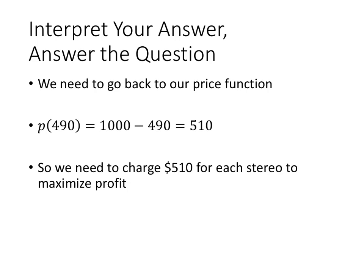So that means we need to go back to our original formulas and use the price function, plug in x equals 490, and we get that little p, the price, is 510. So that means that we need to charge $510 for each stereo in order to maximize profit. That's the question that we were asked, and so that's the answer that we need to give.